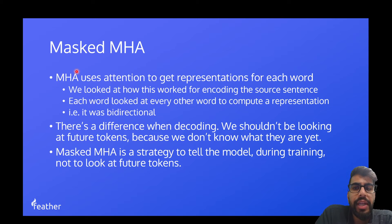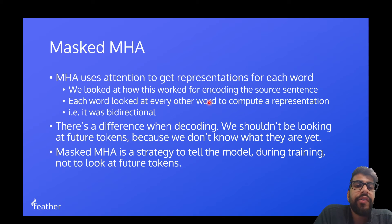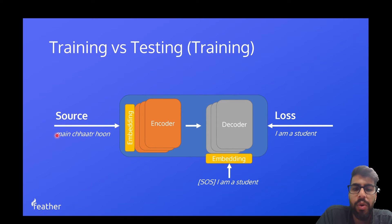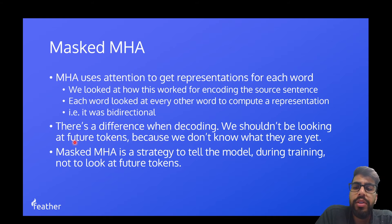Standard multi-head attention uses attention to get representations for each word. Every word looks at every other word to compute a representation, making it bidirectional. But there's a difference when decoding: we shouldn't be looking at future tokens because we don't actually know what they are yet.